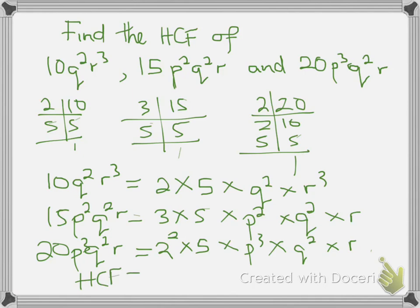my highest common factor will be equal to: 2 is not common here. 5 is common and the least power is 1, so this is 5. 3 is not common. Therefore, we move on to these terms. We have q squared. q squared is common and the least power is square. Therefore, times q squared times r. Here with r cubed, then r. The least power here is r. Therefore, my highest common factor is 5 times q squared times r.